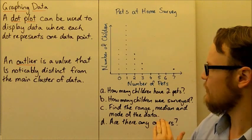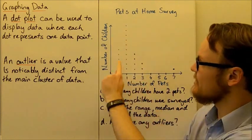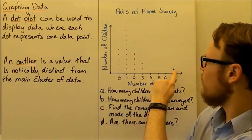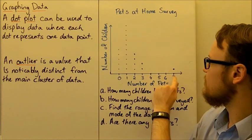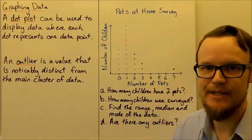We're also asked if there are any outliers. We can see that the main data set is here, but there is one data point all the way out here. So this data point of seven pets is an outlier.